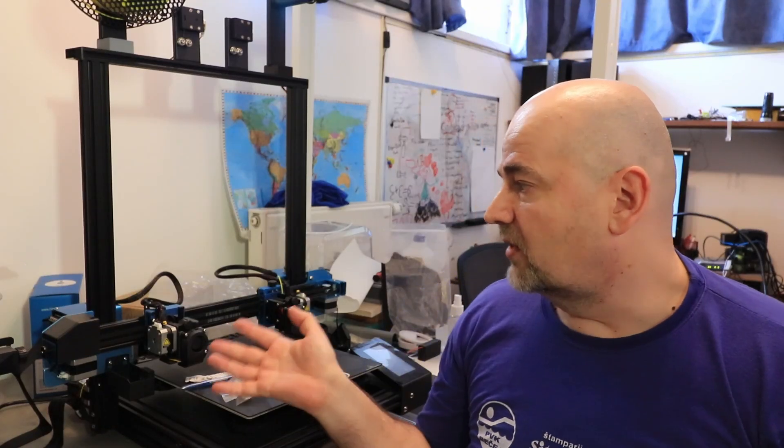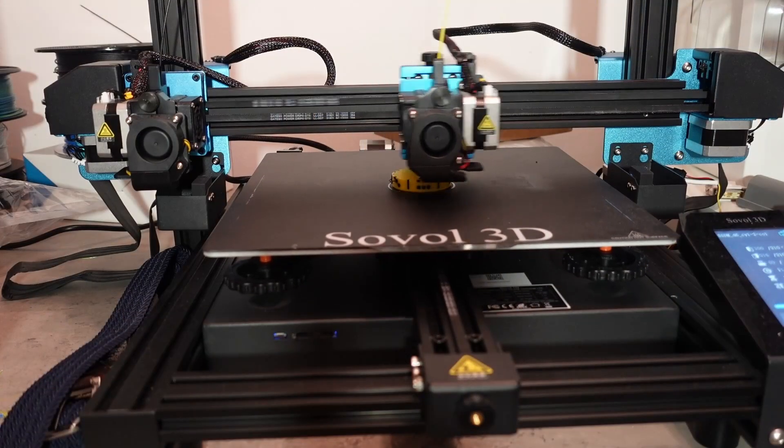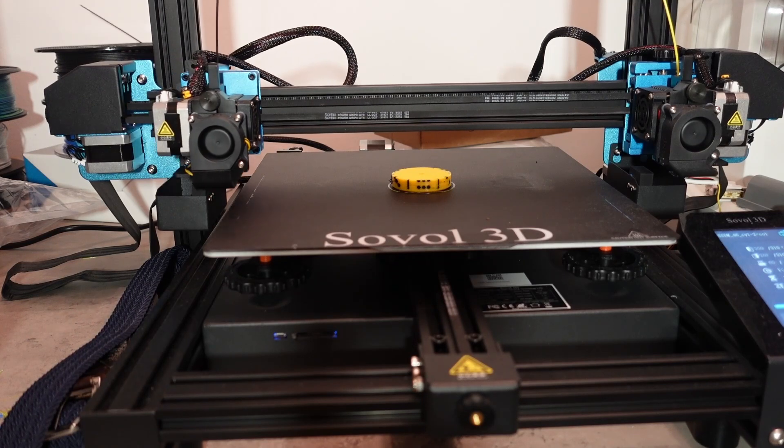Hello, I'm Igor from iTechva, and this is Sovol SV-04 IDEX cylinder printer with two direct drive extruders. It is able to print in two colors without any waste materials.